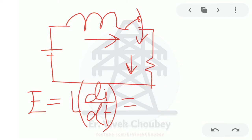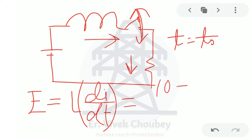Now let's take another case. At a time t = t₀, I am opening this contact. After opening, the current will suddenly go to zero amps. So 10 amps was flowing before, and now it goes to zero — the change in current is 10 minus zero = 10 amps. How much time did it take? It is the time taken by the switch to go from on to off position.